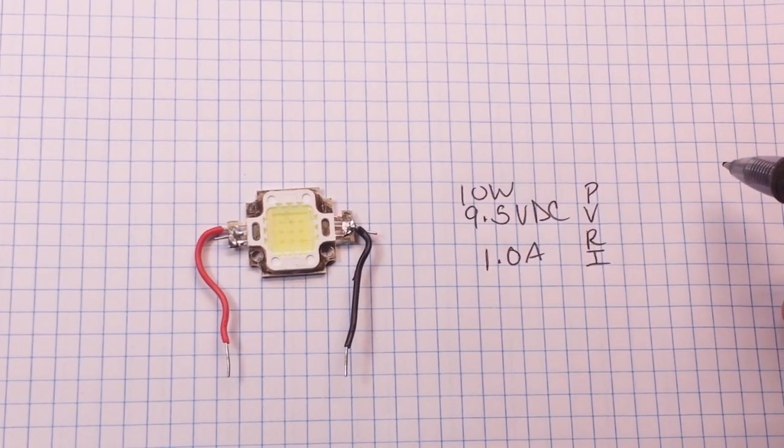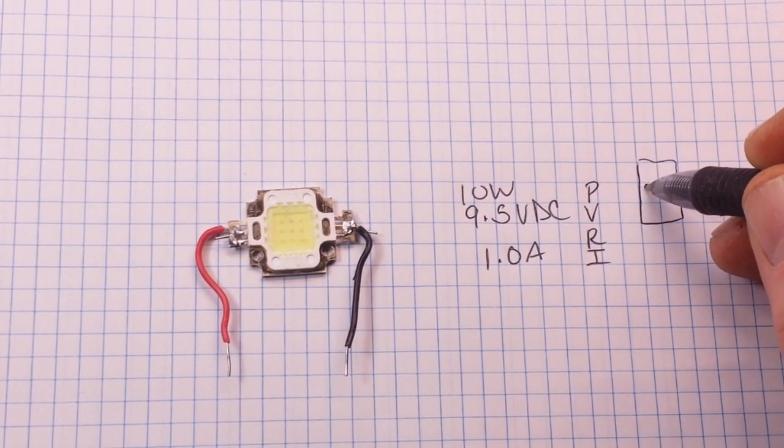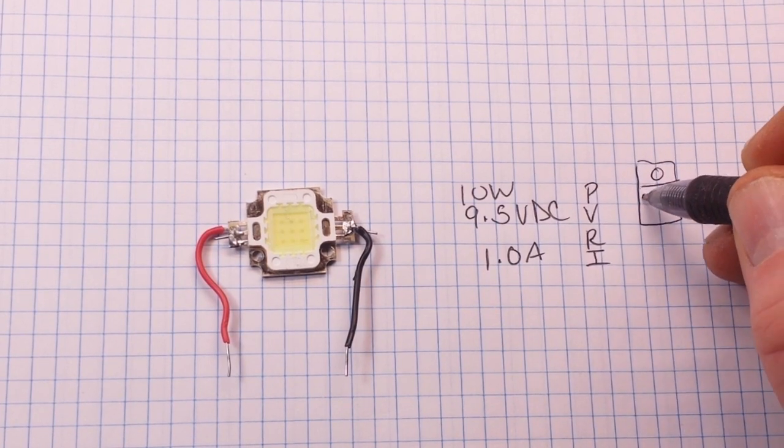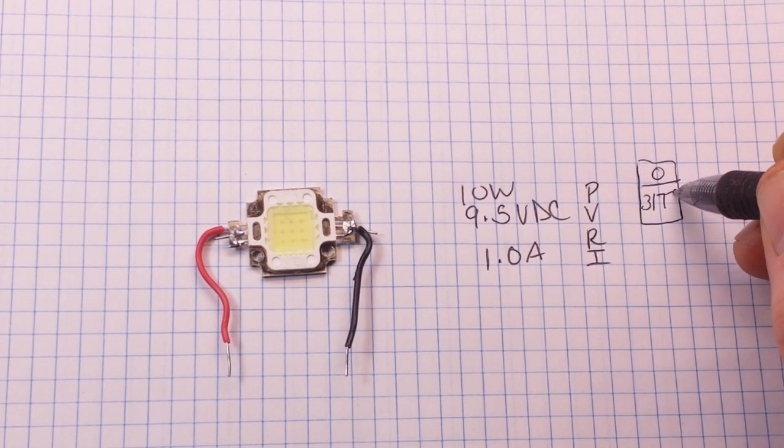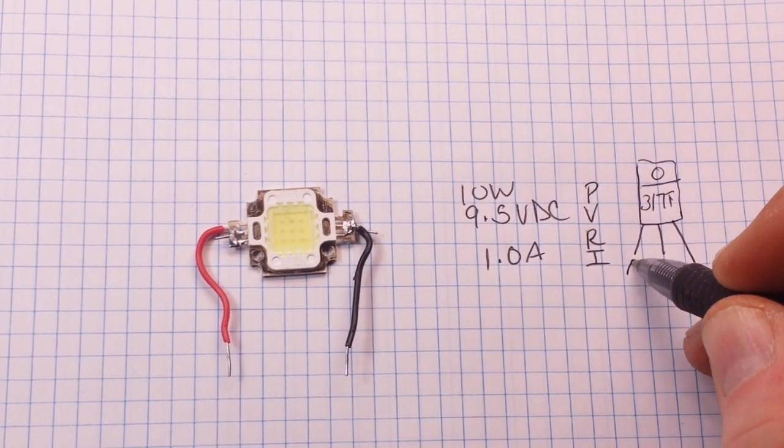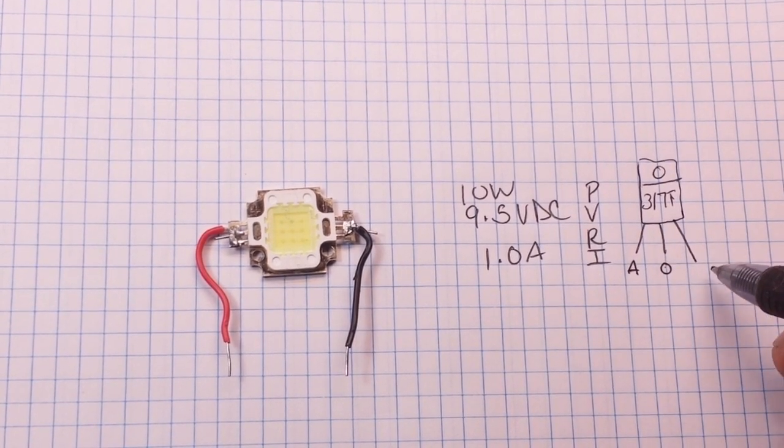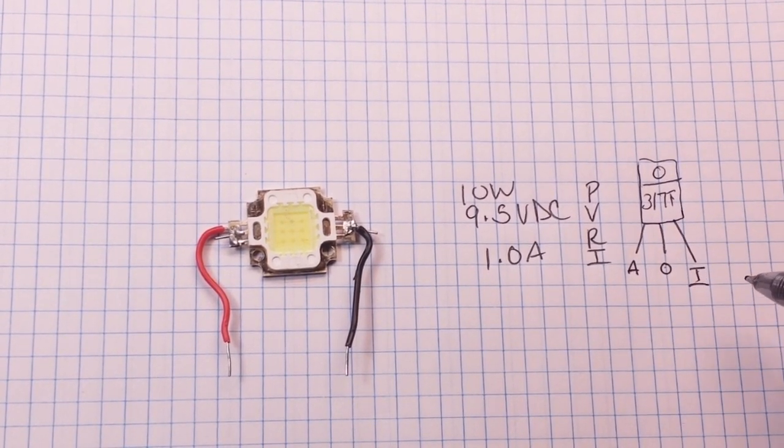And let's draw ourselves a little picture of the guy right here. 3, 1, 7. There's our three legs and they are the adjust, the output, and the input.